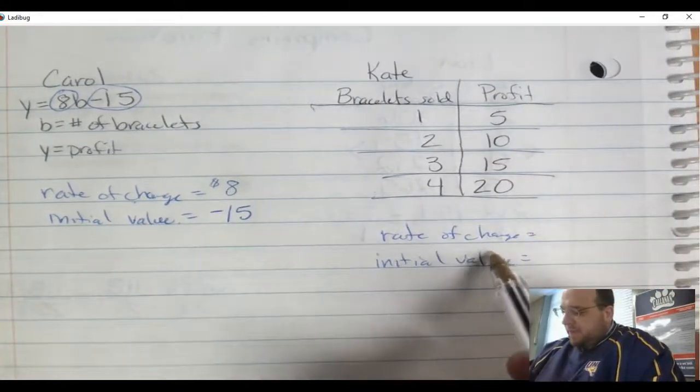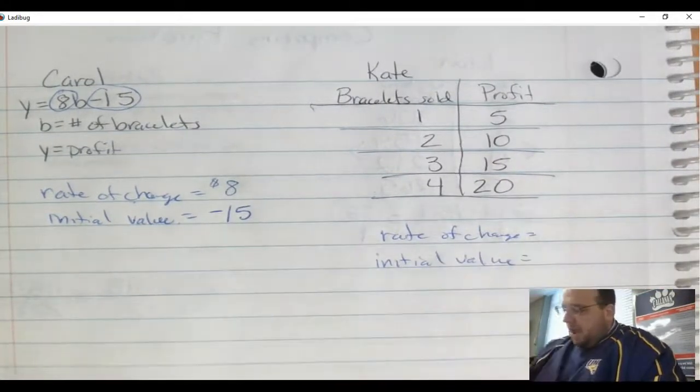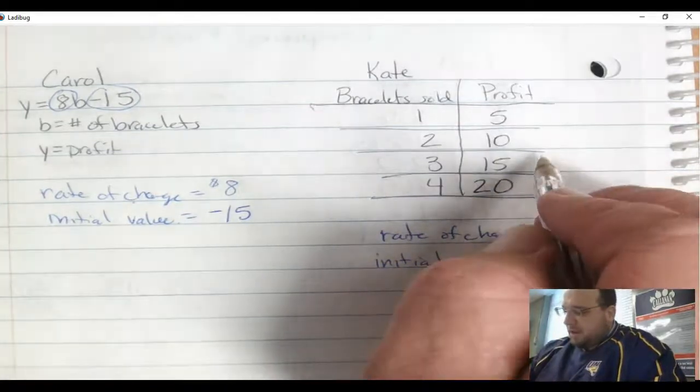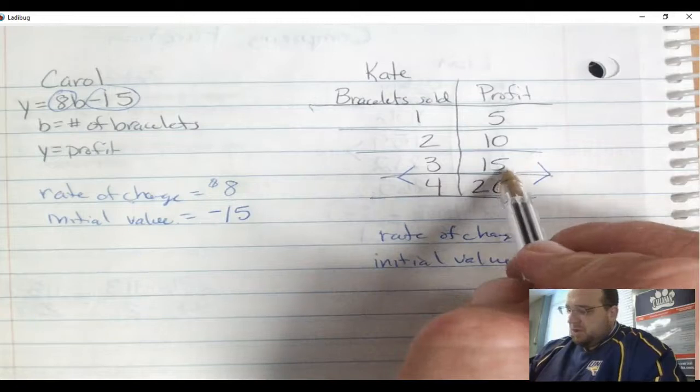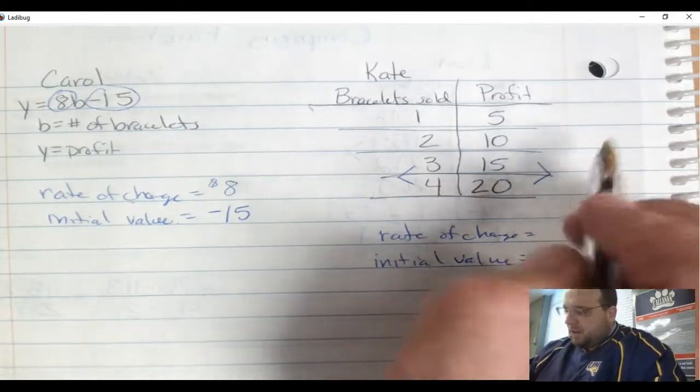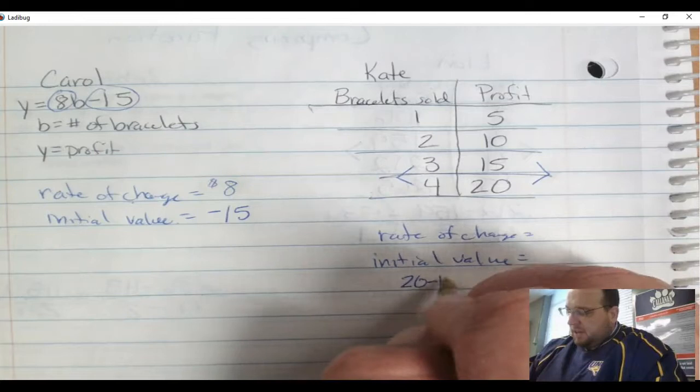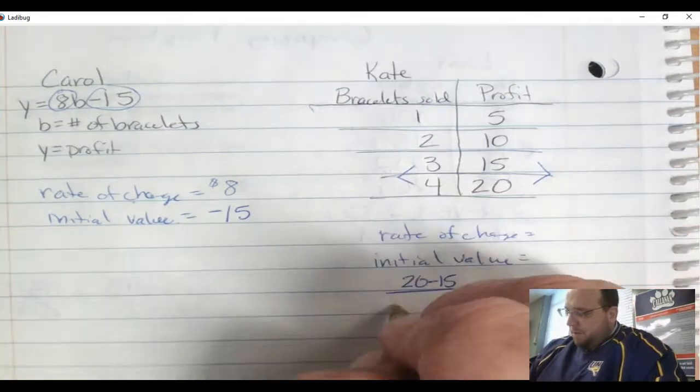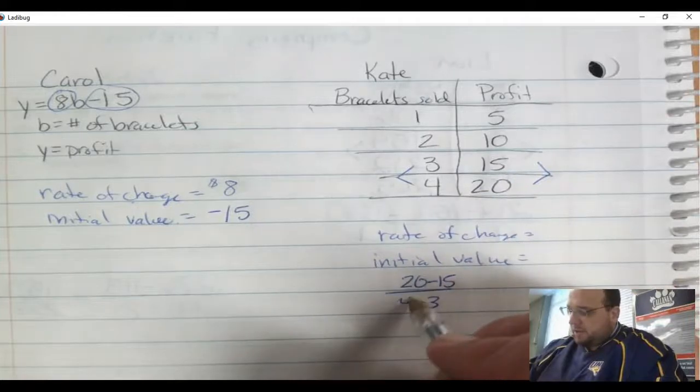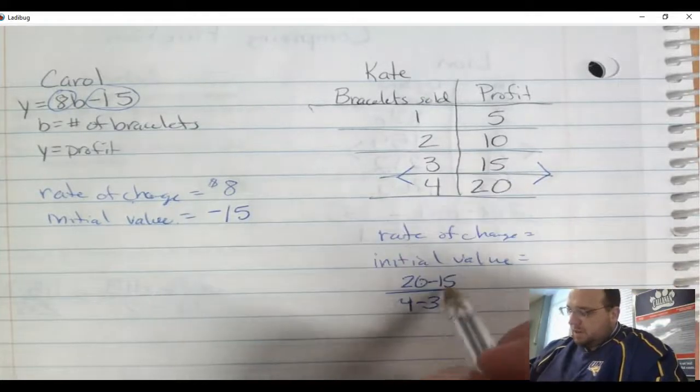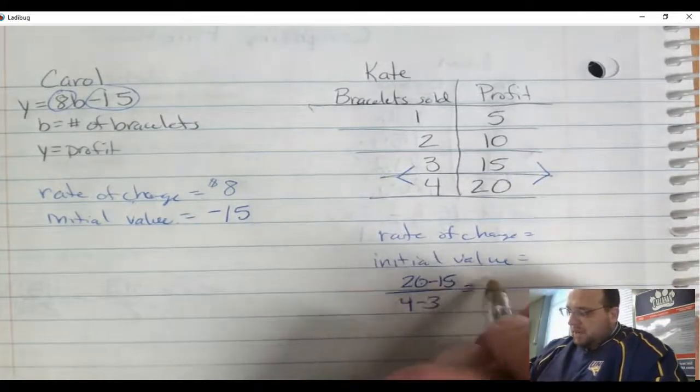For Kate, I'm going to find the rate of change. I picked two coordinate points on here. I'm going to pick these two right here. So I'm going to look over here at the y, 15 to 20. I'm going to take 20 minus 15 over 4 minus 3, because notice that 4,20 is this coordinate, 3,15 is this coordinate pair.